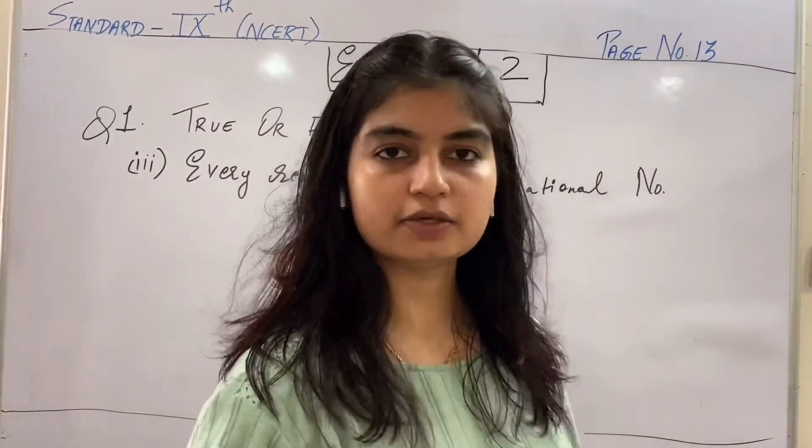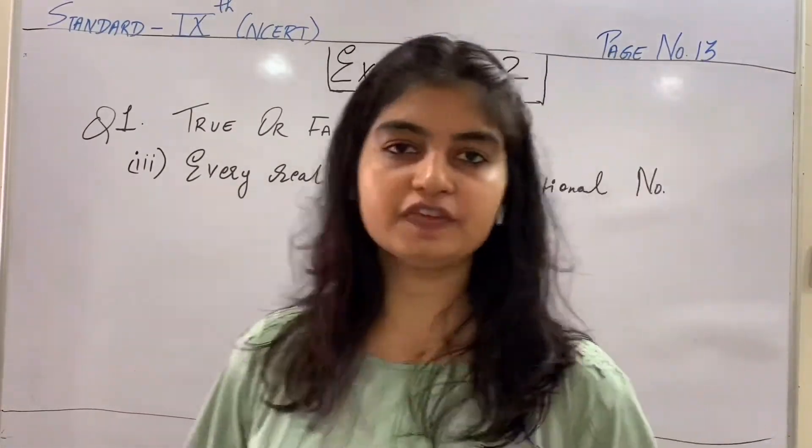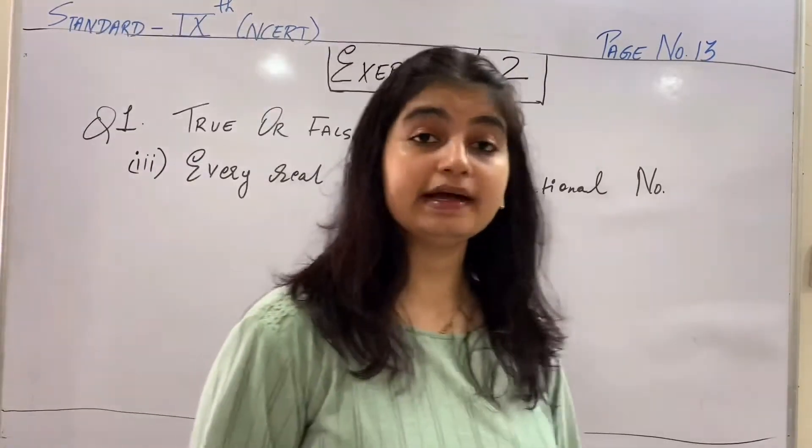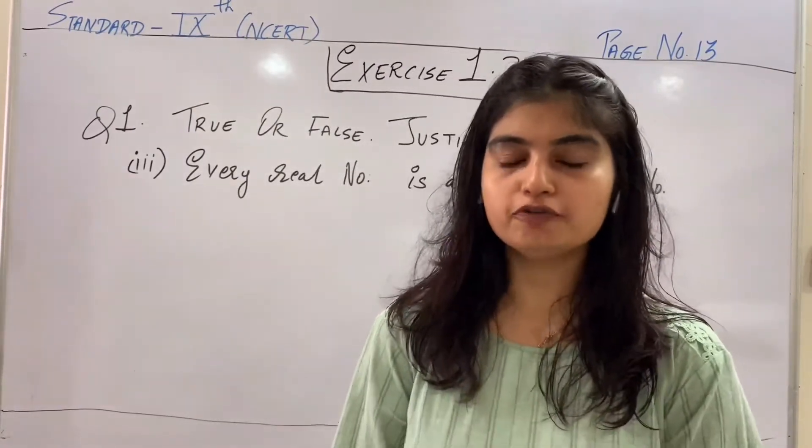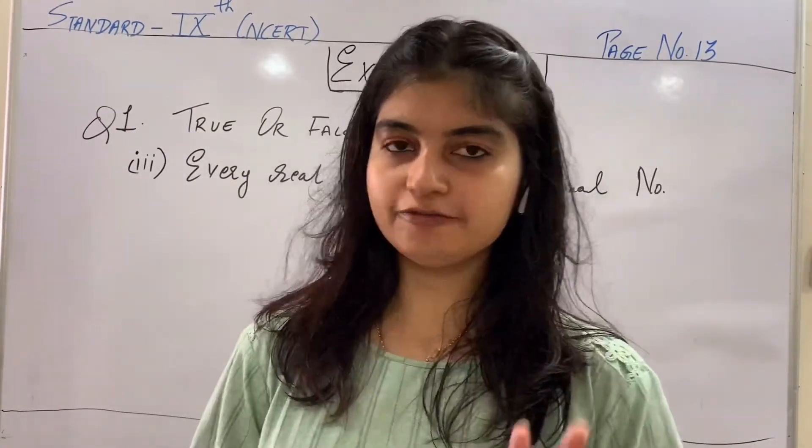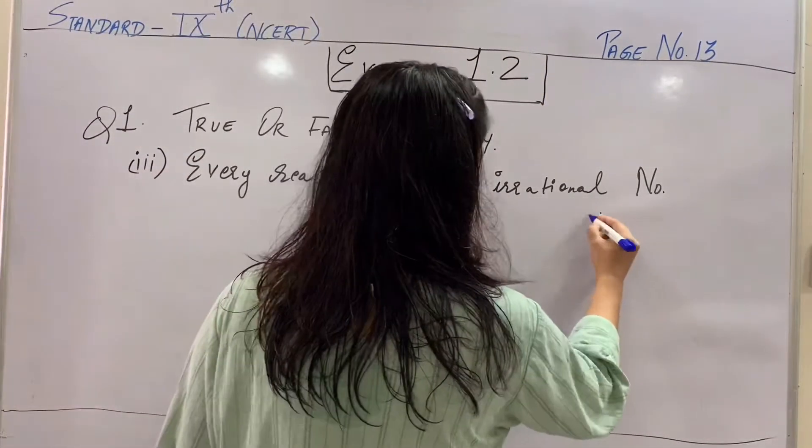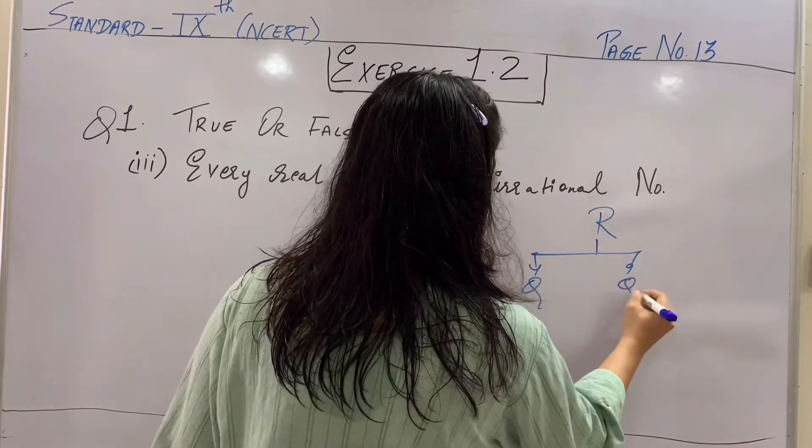Just your next third statement in the case of true and false. Woh likha hai every real number is an irrational number. So, bataiye aap flowchart draw kijiye jo maine aapko first lecture se main jo bata rahi hun aapko flowchart. That should be in your mind for the whole of the chapter. Toh agar aap woh draw karenge pehle se jo main kar rahi hun abhi. The real numbers ke andar aate hain rational, irrational, rational ke andar aata hai the integers, the whole numbers and the natural numbers.